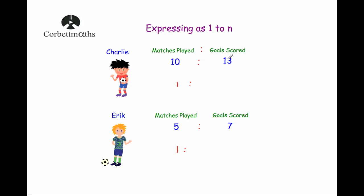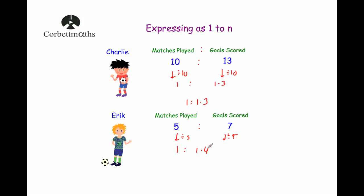For Charlie's ratio 10 to 13, we divide both numbers by 10 to get 1 to 1.3. That means Charlie scores on average 1.3 goals per game. For Eric's ratio 5 to 7, we divide both numbers by 5. 5 divided by 5 is 1, and 7 divided by 5 is 1.4. So Eric has a matches-to-goals ratio of 1 to 1.4 — he scores on average 1.4 goals per game, slightly more than Charlie's 1.3.